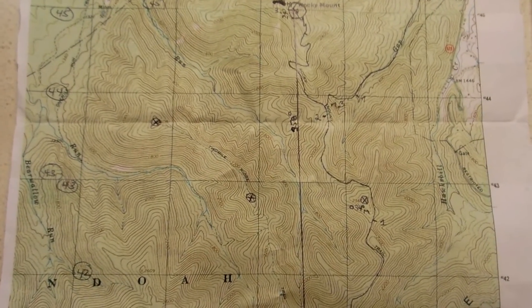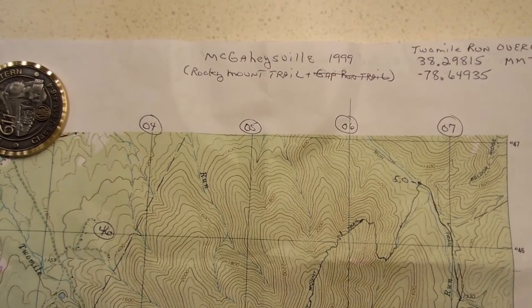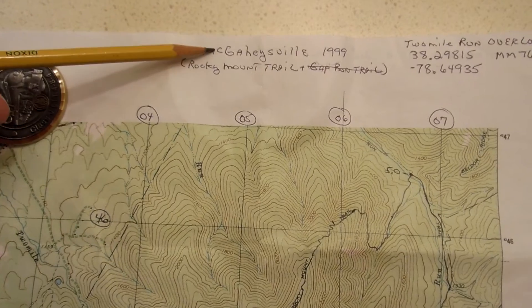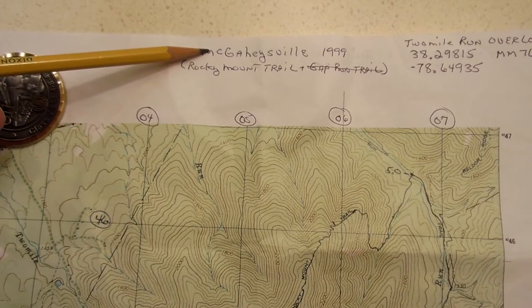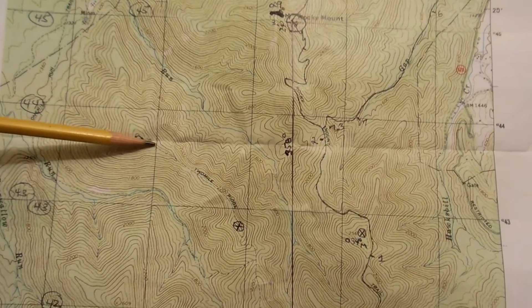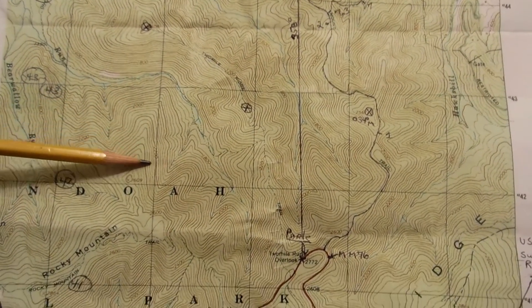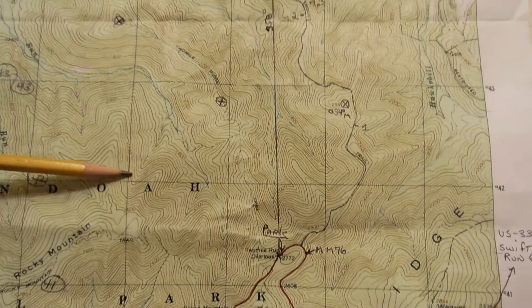So this is one of the USGS quadrangle maps. This one is McGaheysville 1999, the one I used for the hike, and these vertical lines here are the grid lines. This is grid north.